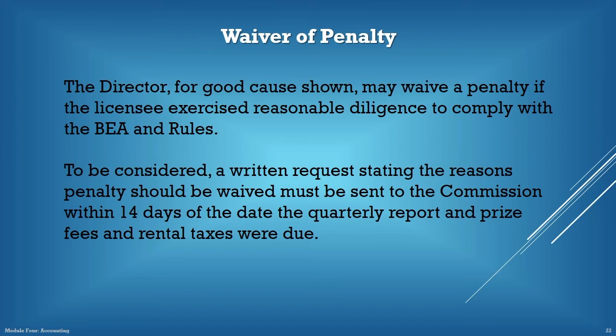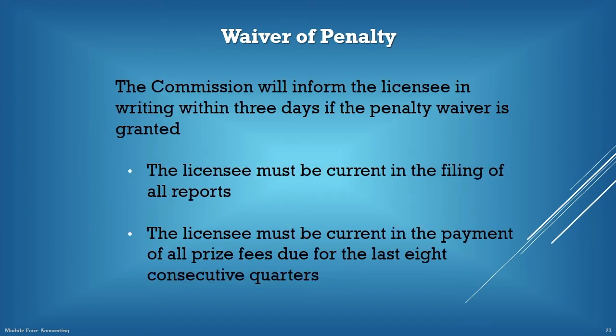To be considered for a penalty waiver, a written request stating the reasons the penalty should be waived must be sent to the commission within 14 days of the date the quarterly report and prize fees and rental taxes were due. The commission will inform the licensee in writing within three days if the penalty waiver is granted. The licensee must be current in the filing of all reports and in the payment of all taxes or prize fees due for the last eight consecutive quarters. If a licensee has had a penalty waived within the last eight consecutive quarters, the current request will be denied.